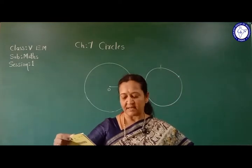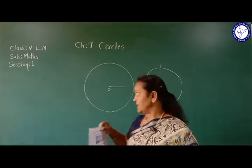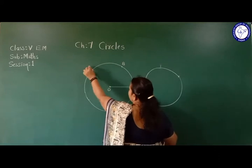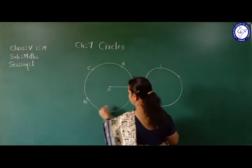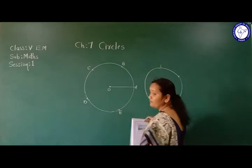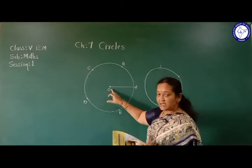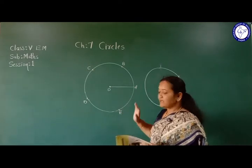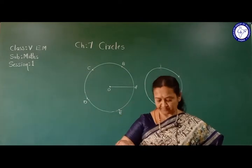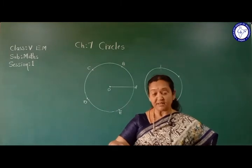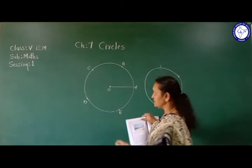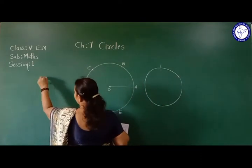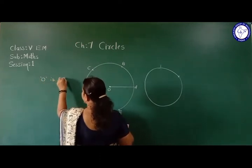All the points on the circle are equidistant from a fixed point. Here we have one fixed point O, and all the points on the circle - suppose B, C, D, E - these points are equidistant from the fixed point O. This fixed point is called the centre of the circle. So point O is called the centre of the circle.